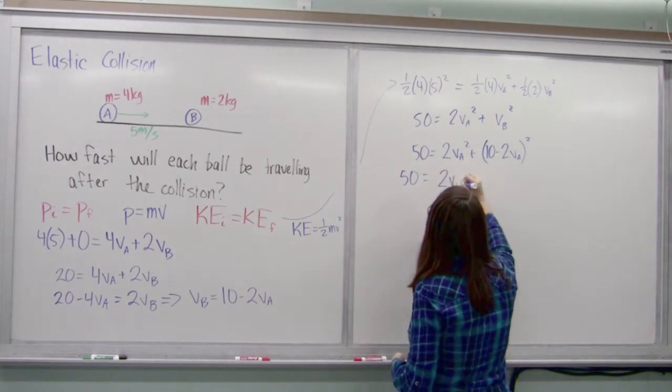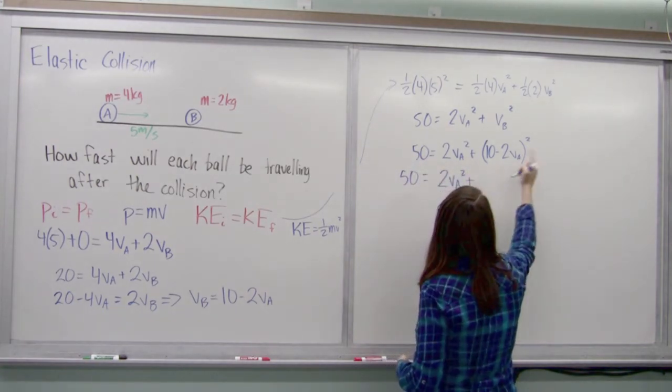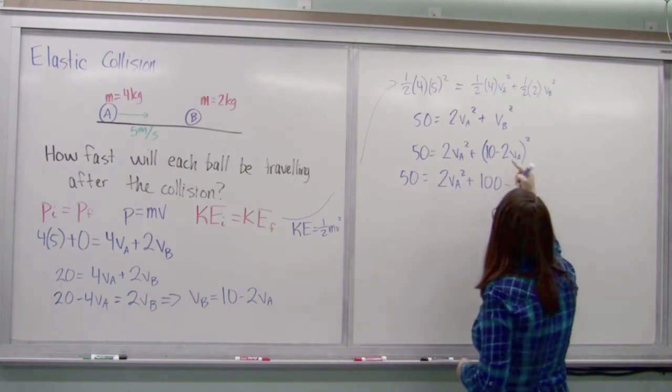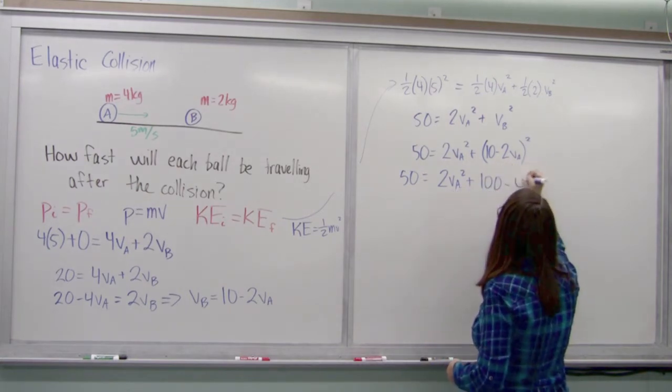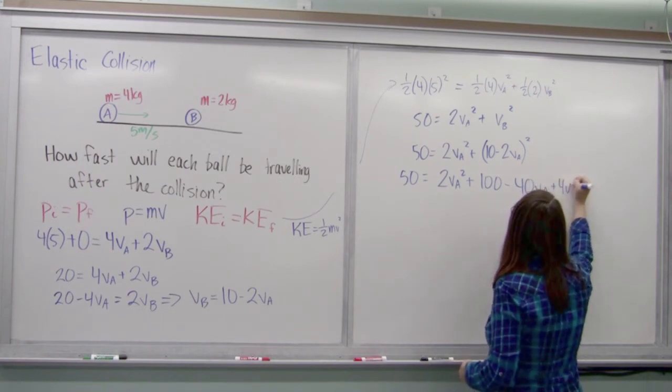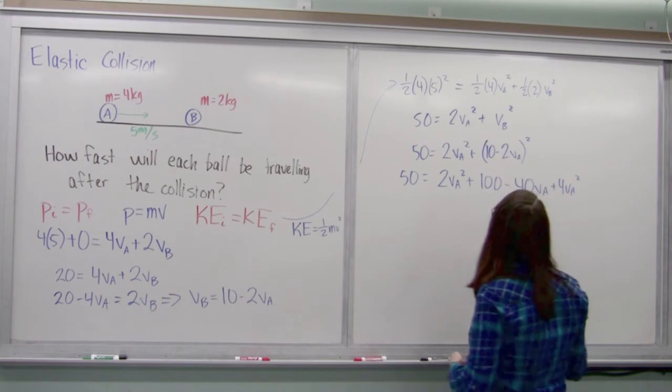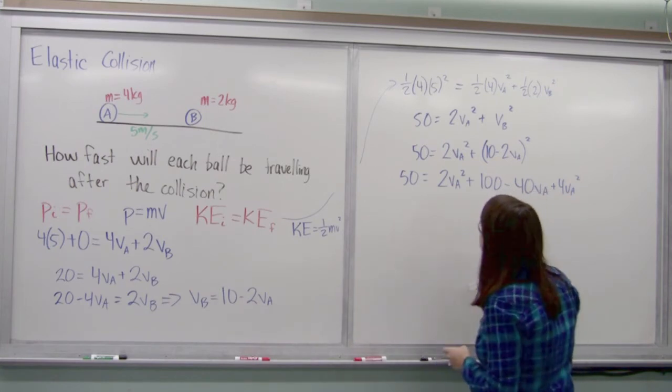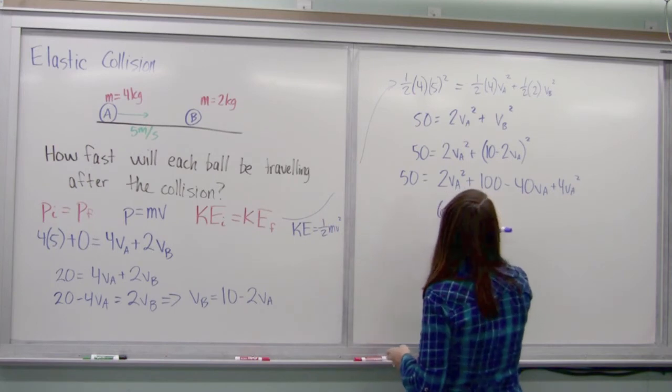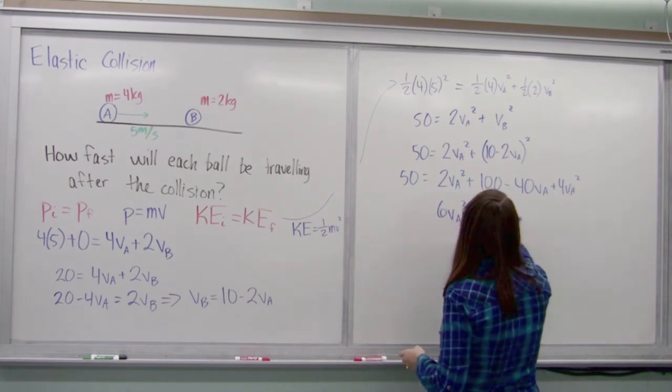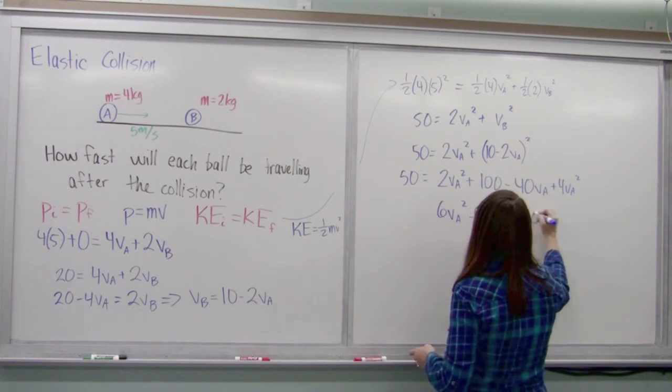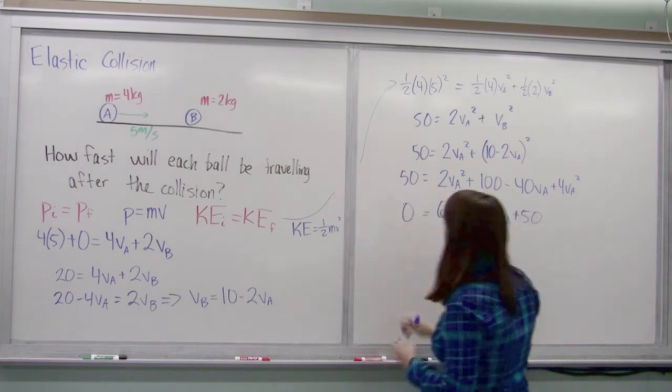It's 2 VA squared plus, let's see, 100 minus 20 times, 40 VA plus 4 VA squared. And putting this all together, 6 VA squared minus 40 VA plus 50 is equal to 0.